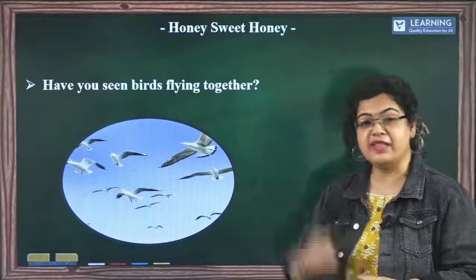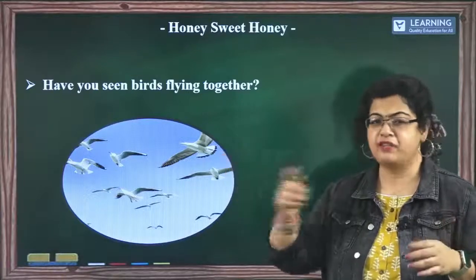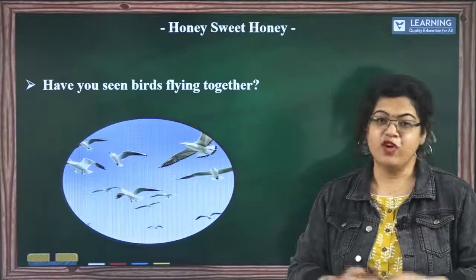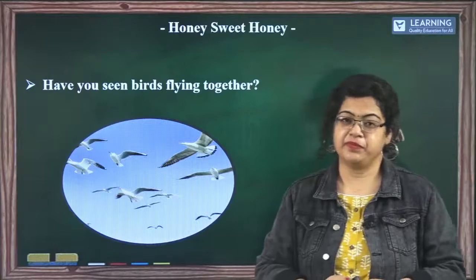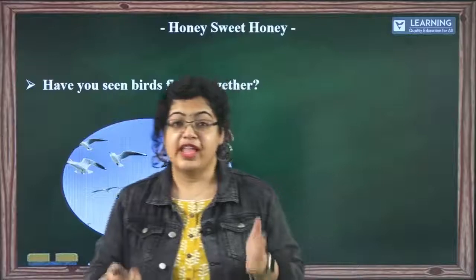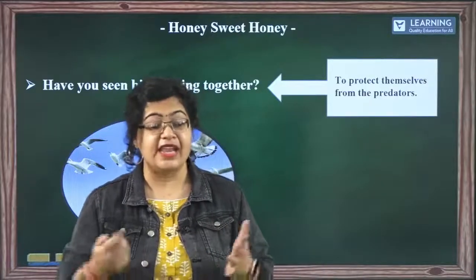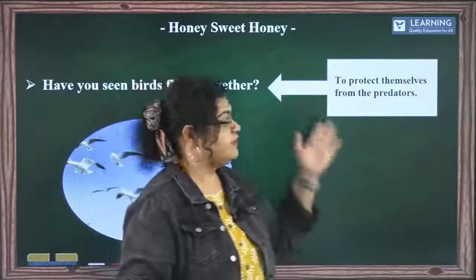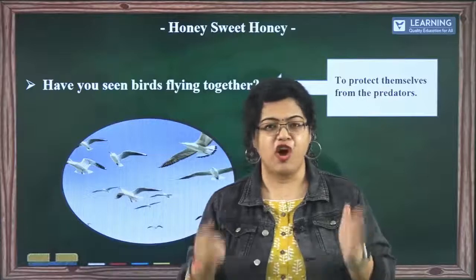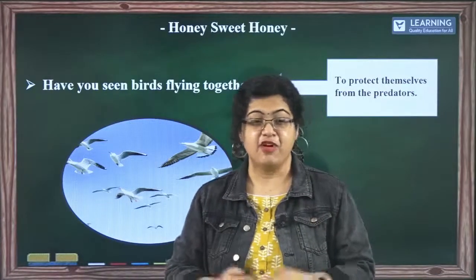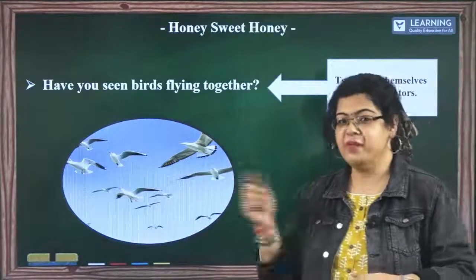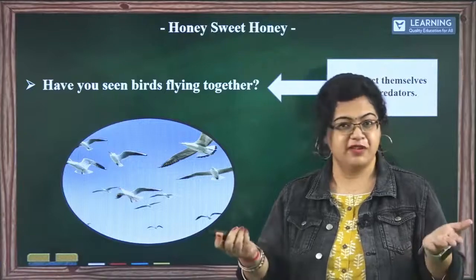Sometimes when you look up in the sky you see many birds flying together. Are they friends? What is the reason that they fly together? If they fly alone, predators can attack and eat them, so to save themselves they go in groups — they are called a flock of birds. This is where the saying 'birds of the same feather flock together' comes from, because birds are covered with feathers.